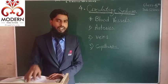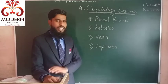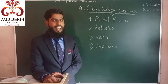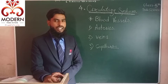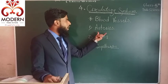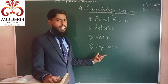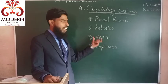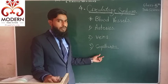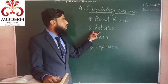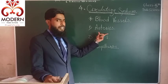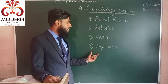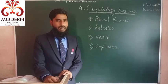Do you know how many types of blood vessels are present in our body? There are three kinds of blood vessels: arteries, veins, and capillaries. Remember these. The first vessel is arteries, the second is veins, and the third is capillaries.